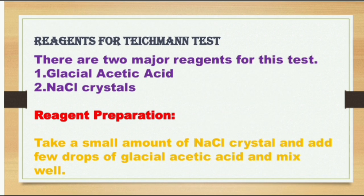Now we will talk about reagents for the Teichmann test. There are two major reagents for this test. First is glacial acetic acid and second is NaCl crystals. Preparation: take a small amount of NaCl crystals, add a few drops of glacial acetic acid, and mix well.